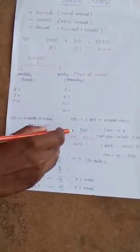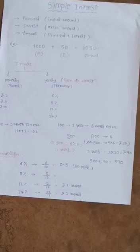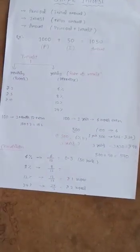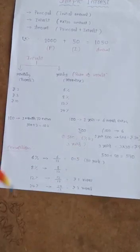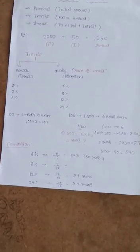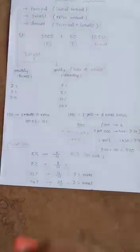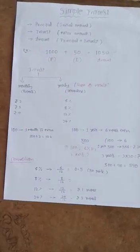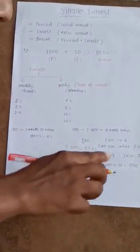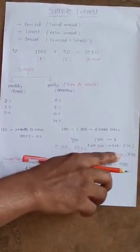For example, I took 500 rupees at a rate of interest of 6% for 3 years. What is the amount I have to pay? The rate of interest is 6%, meaning for 100 rupees, 6 rupees extra per year. So for 100 rupees, the extra amount is 6 rupees. For 500 rupees, since there are five hundreds, the extra amount is 5 times 6.